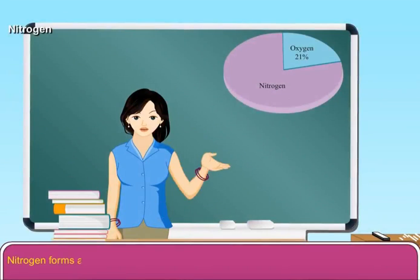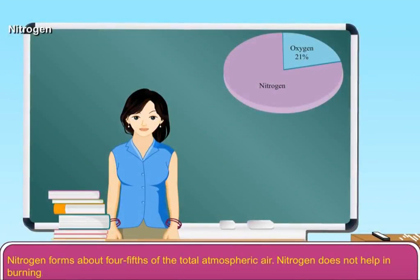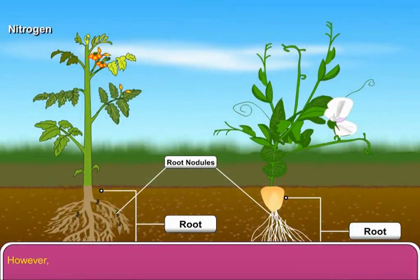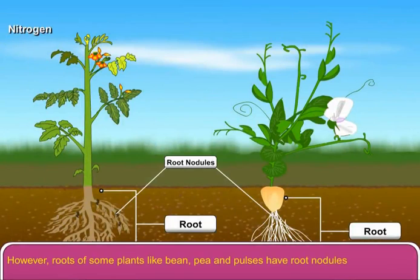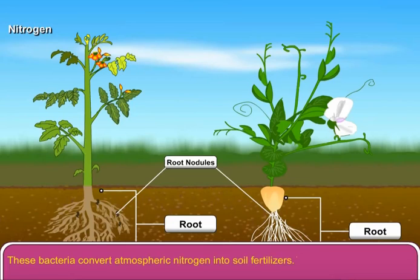Nitrogen forms about four-fifths of the total atmospheric air. Nitrogen does not help in burning. However, roots of some plants like bean, pea and pulses have root nodules that bear some bacterial cells. These bacteria convert atmospheric nitrogen into soil fertilizers. This process is known as biological nitrogen fixation.